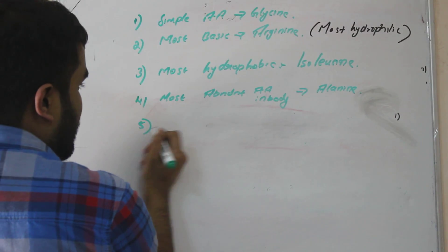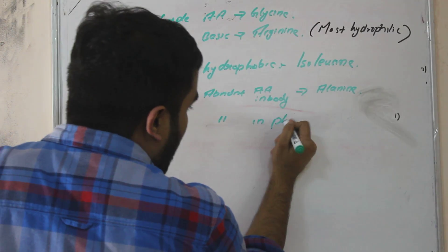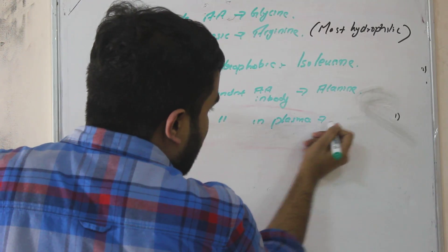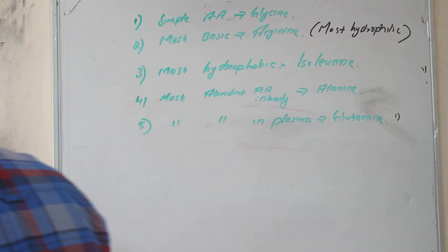Then say most abundant amino acid in plasma. Plasma is glutamine. Most abundant amino acid in plasma is glutamine.